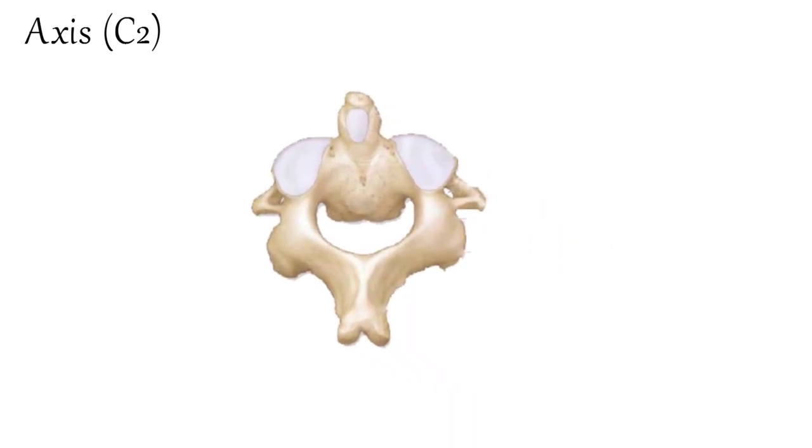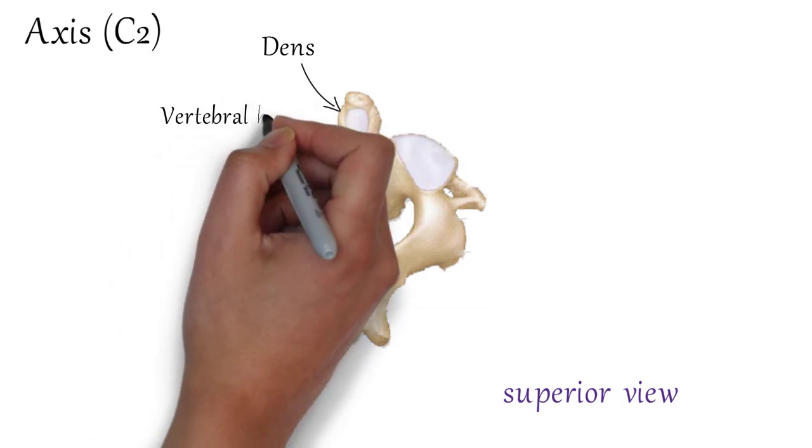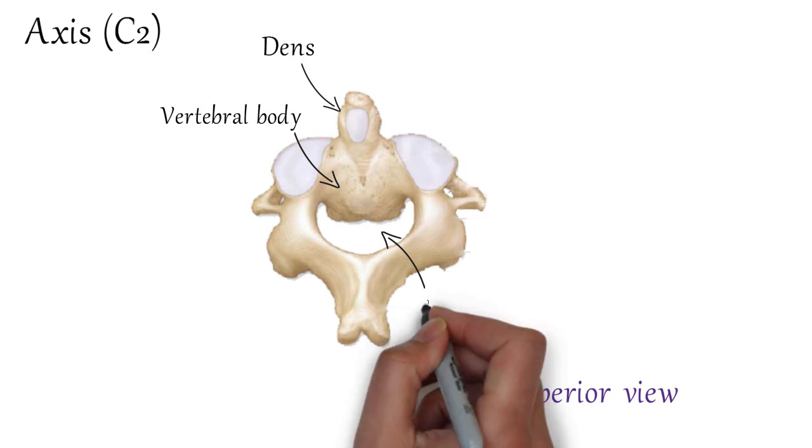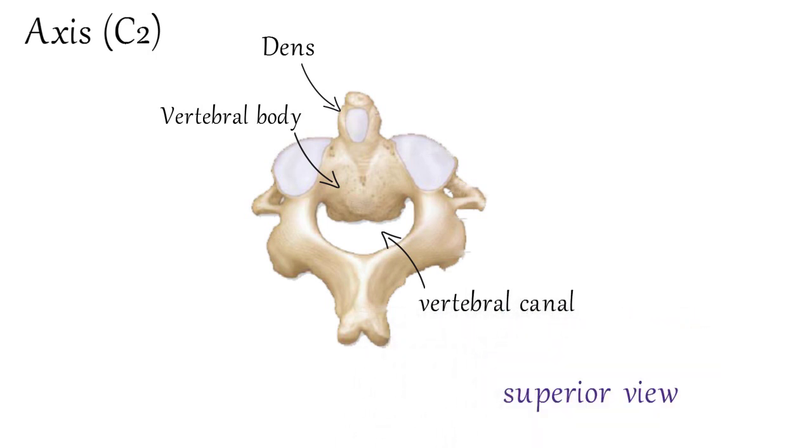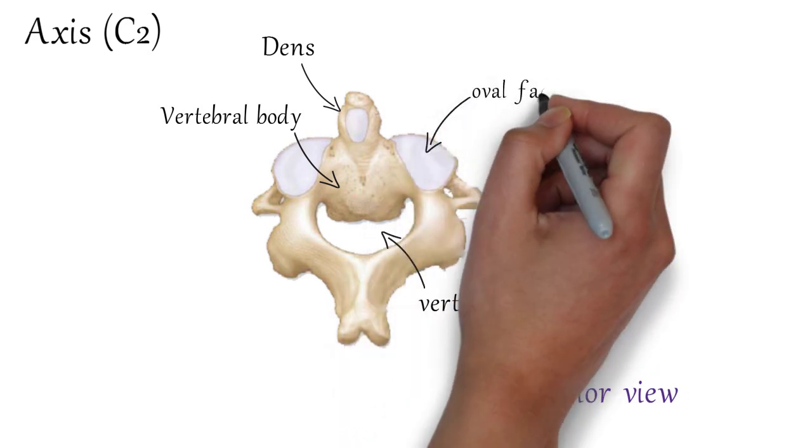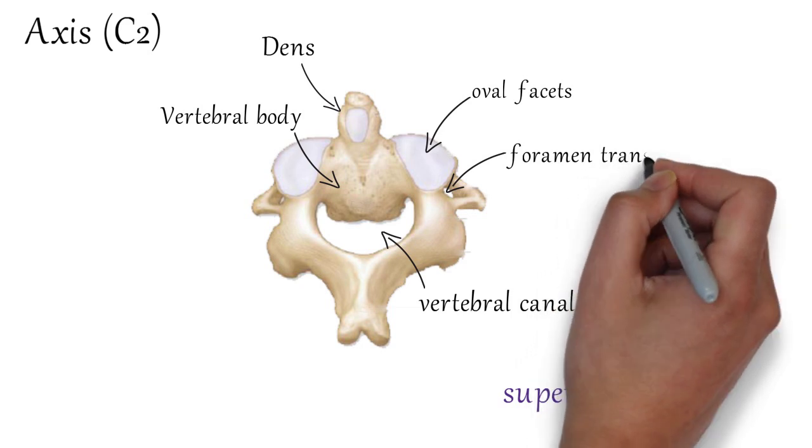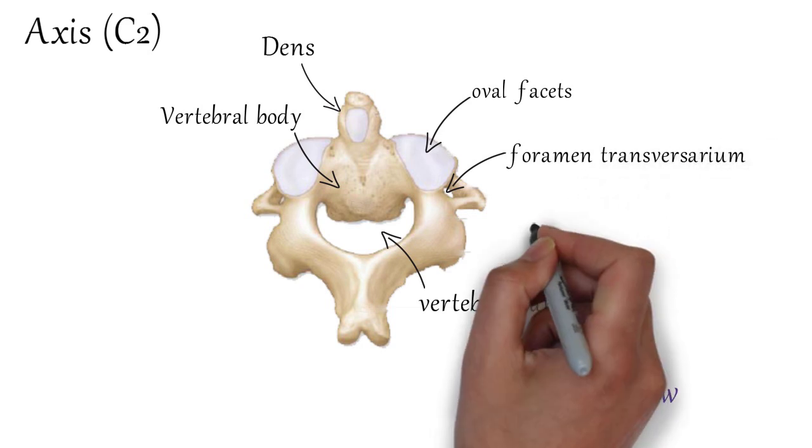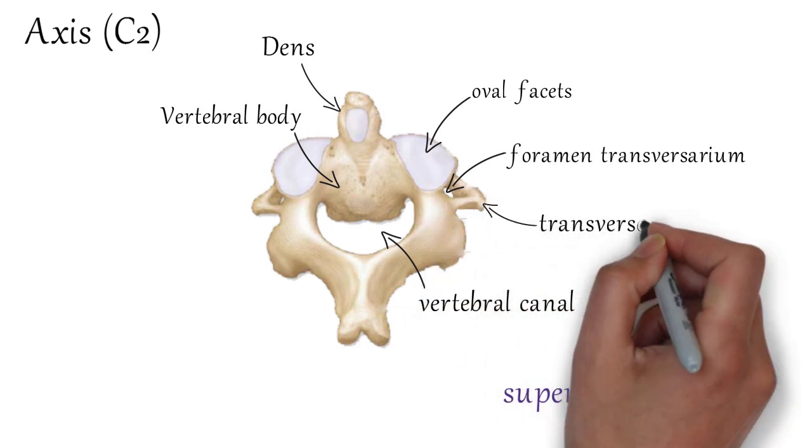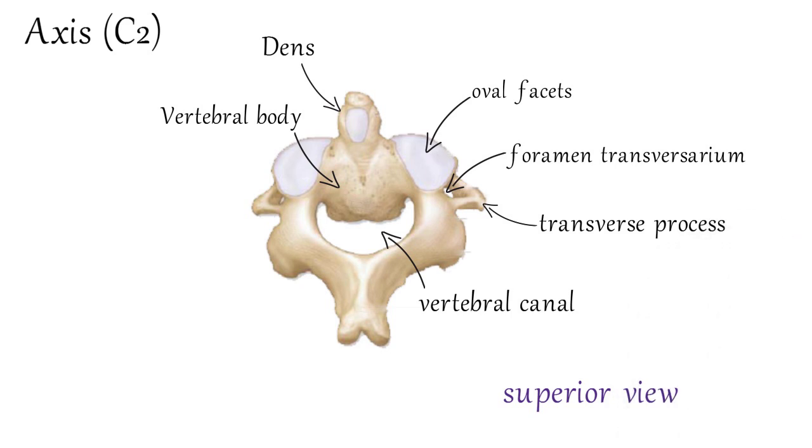Now let's see the second cervical vertebrae, which is also known as axis. This is identified by the presence of dens or odontoid process. This is a tooth-like structure projecting upwards from the body. This is the vertebral body. This is the vertebral canal. There are two oval facets. This is the foramen transversaria. This is the transverse process, the lamina, and the spine, which is bifid.